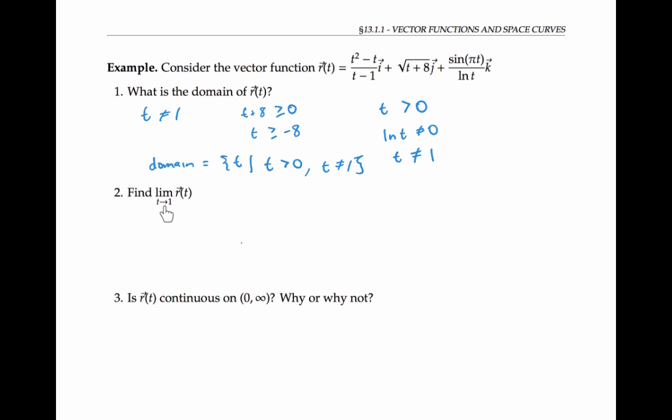Next, let's find the limit as t goes to one of r of t. We can find this by taking the limit separately of each component. Now the limit as t goes to one of t squared minus t over t minus one, I can't evaluate that just by plugging in one for t since I have a zero over zero indeterminate form. But I can use various calculus one techniques. For example, I could factor the numerator, cancel with the denominator, and get the limit as t goes to one of t, which is just one.